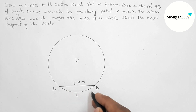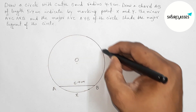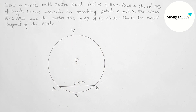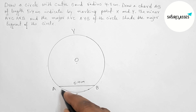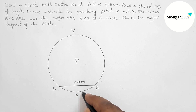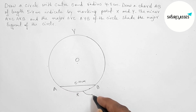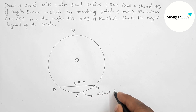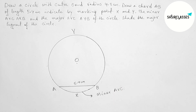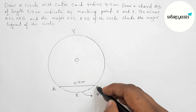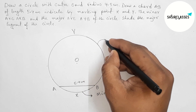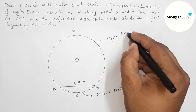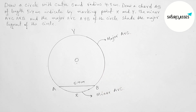Now marking points X and Y on the circle. Taking point X and taking point Y. So AXB — this is the minor arc of the circle. And AYB — this is the major arc of the circle.